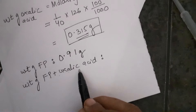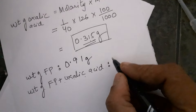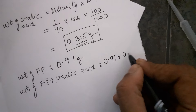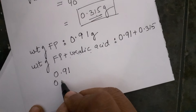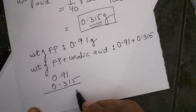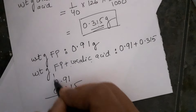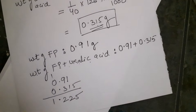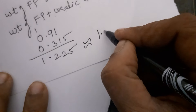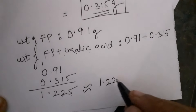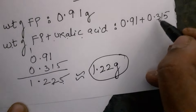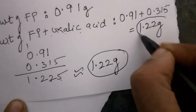Now we need the weight of filter paper plus oxalic acid. We require 0.91 plus 0.315. Adding these: the result is 1.225, but the digital balance only has 2 decimal places and we have 3 decimal places here. So I will round it off to 1.22 — because the digit is even and the next digit is 5, so in the case of even rounding it stays as is. So we need to weigh 1.22 grams here. You will add oxalic acid until you reach 1.22.